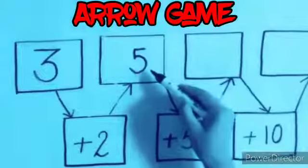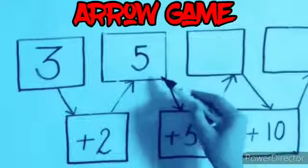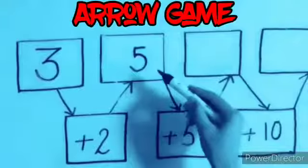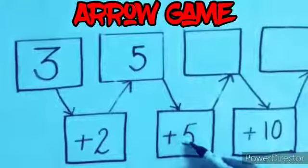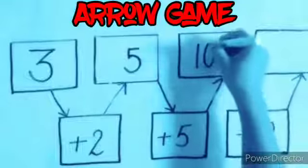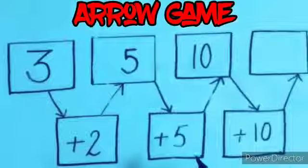Now we have 5 and arrow going downward and showing the number plus 5. 5 plus 5, that is equal to 10.